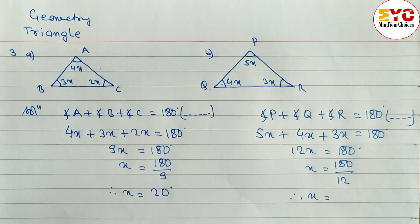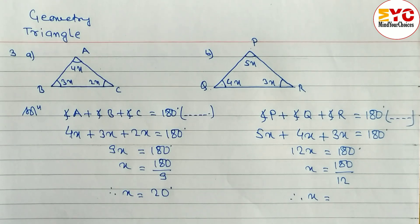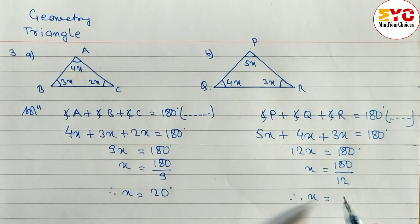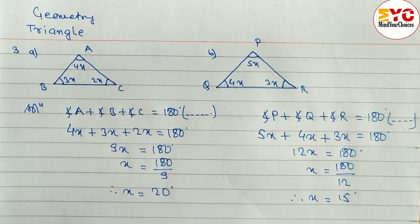X is equal to 180 divided by 12. Therefore when you divide this, we get the value of x. 180 divided by 12, we get 15. So write down here 15 degrees. So value of x is equal to 15.